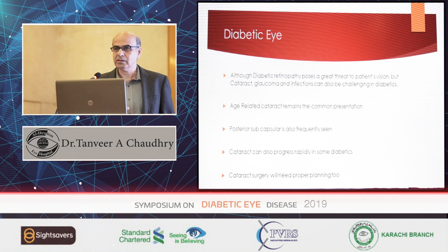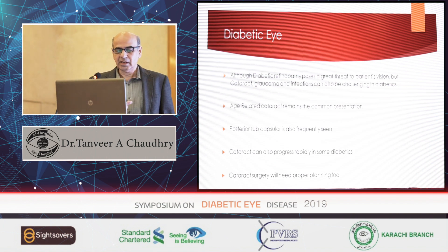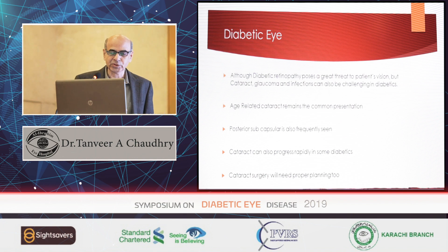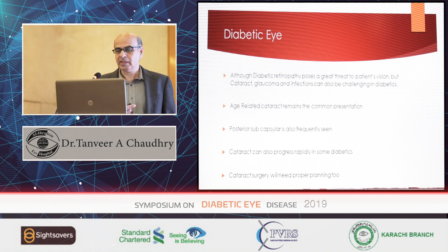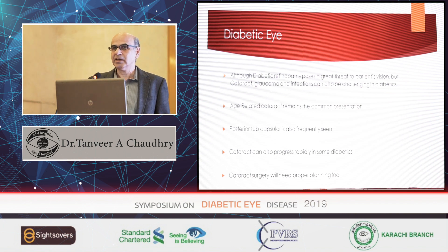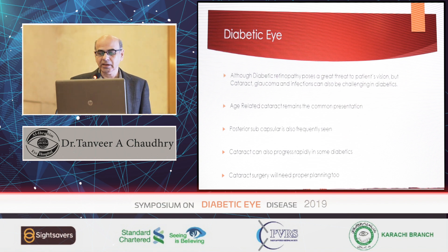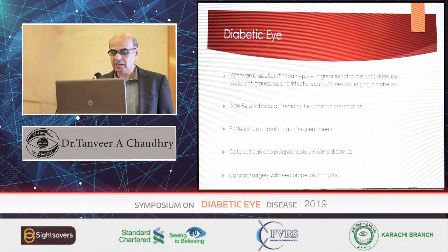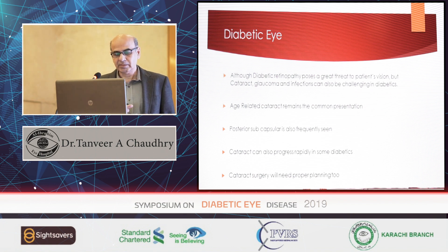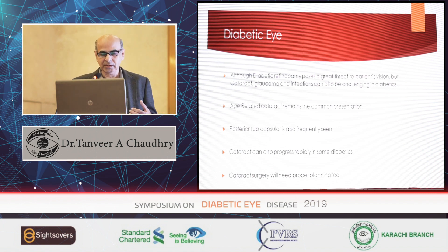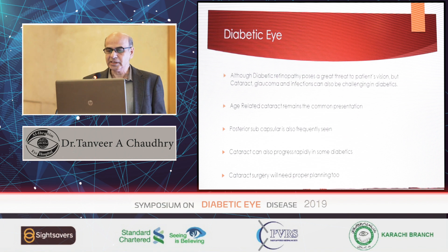Age-related cataract remains the most common type, and sometimes it progresses more rapidly in diabetics. Some studies have shown that posterior subcapsular cataract is frequently seen and cataract can progress rapidly, especially in younger diabetics. Cataract in these cases needs proper planning — you just can't do cataract surgery without thinking things through.